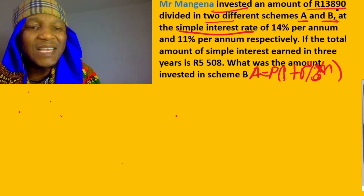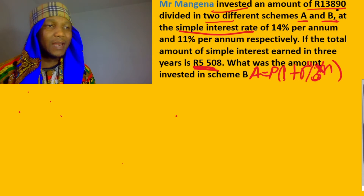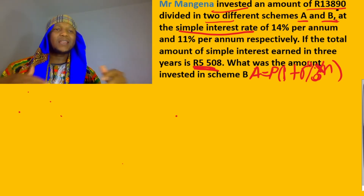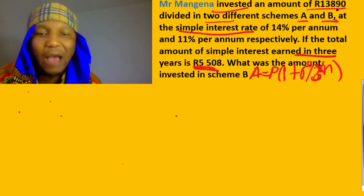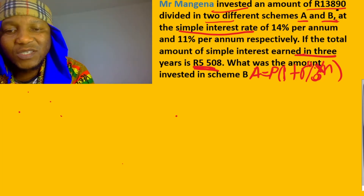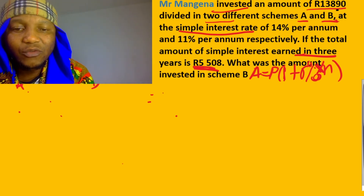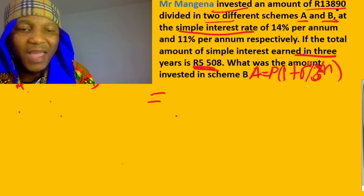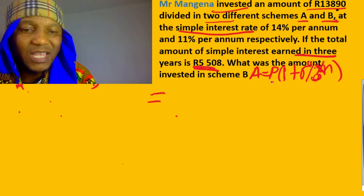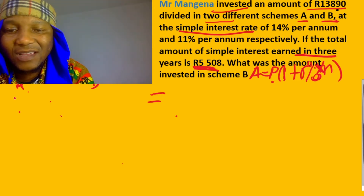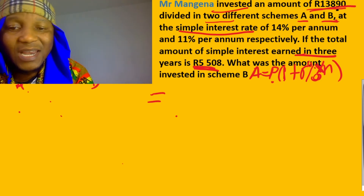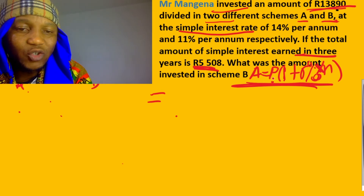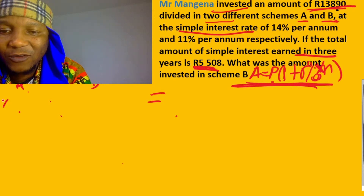He said the total amount he earned - he took the money, invested into different schemes, and after three years he earned a return. So we have Scheme A and Scheme B here, and a total. For Scheme A, because we don't know how much was invested, we're going to call the principle x.